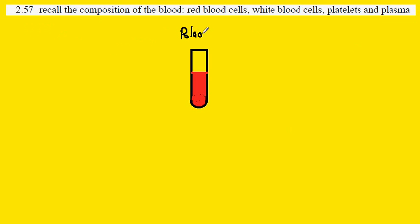So here we have our sample of blood. Of this sample, 45% of this is cells and 55% of this is plasma.